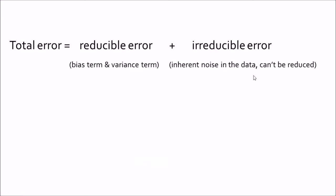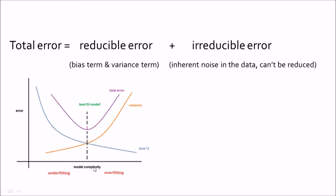Mathematically, we can classify the total error into a reducible error and an irreducible error. The reducible error contains the error due to bias and variance. The irreducible error is an inherent noise present in the data which cannot be reduced — you just have to make peace with that.